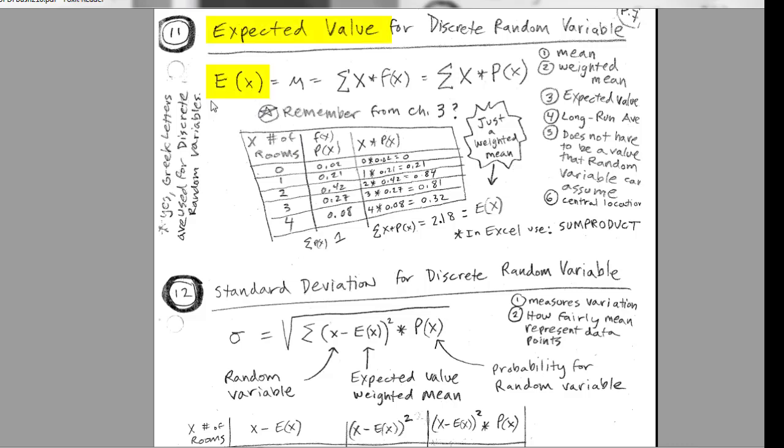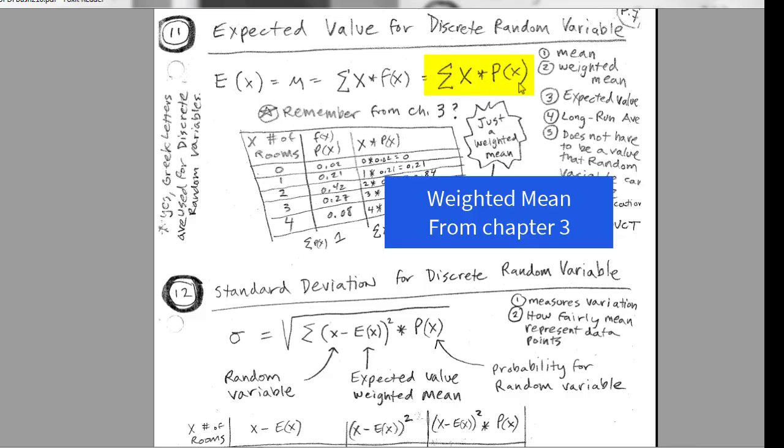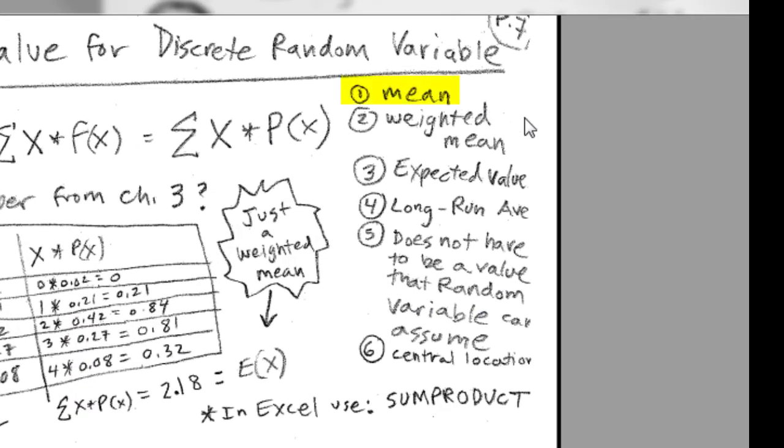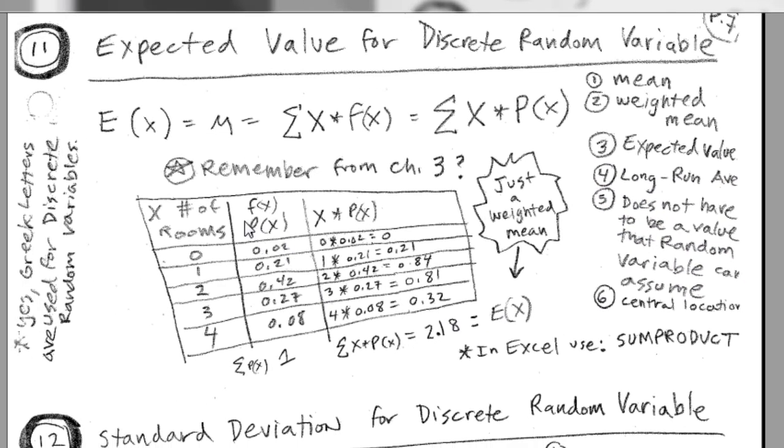Expected value, that's the term they often use when we have frequency distribution. It just means we need to calculate the mean. They will use mu, which is a Greek letter to represent this. I'll tend to use expected value. But notice x times probability, you do all of them and then add them up. We actually did this as a weighted average back in Chapter 3. We could think of this as the mean, the weighted mean, the expected value, long run average. And guess what? The value does not have to be a value that the random variable can assume. So for this example right here, here's our number of banquet rooms on any particular day. Well, the actual x value is 0 to 4. We got an average of 2.18. That's perfectly all right. That is our average. But remember, it's just a weighted mean. Super easy. We'll use sum product function.